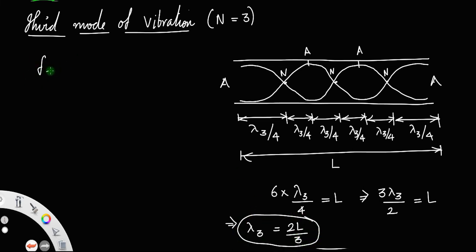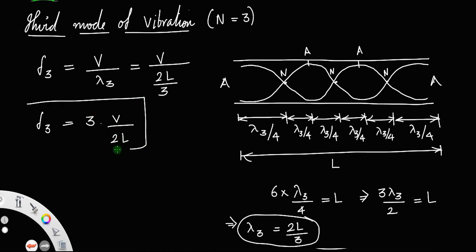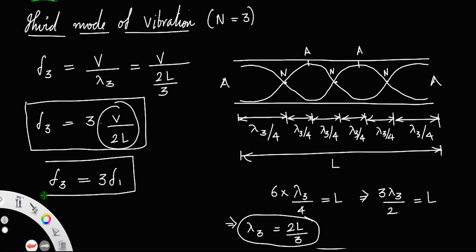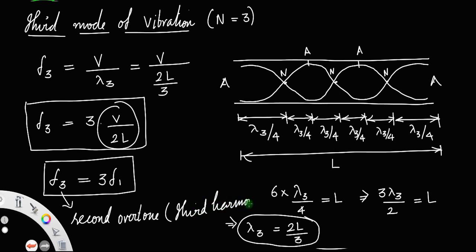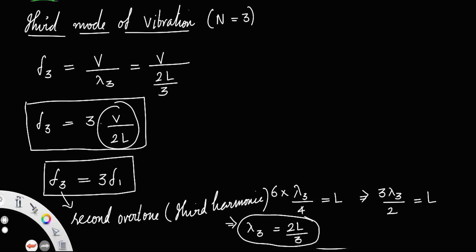The frequency of the third mode is f₃ = v / λ₃ = v / (2L/3) = 3v/2L = 3f₁. This is called the second overtone. We can also write f₃ = (3/2L)√(γp/ρ).